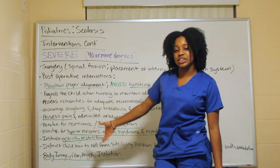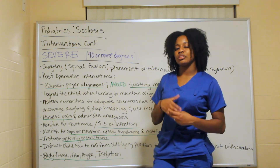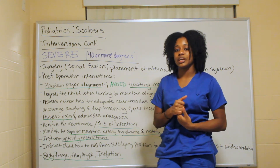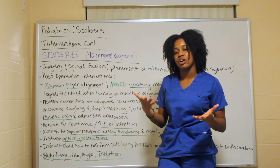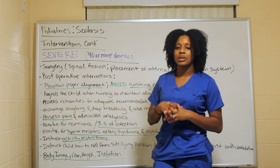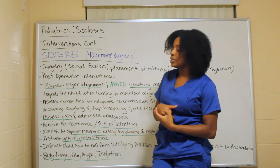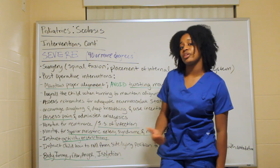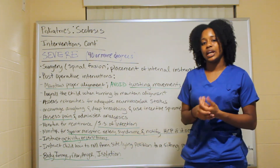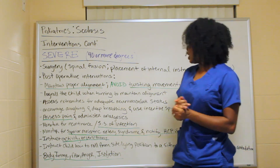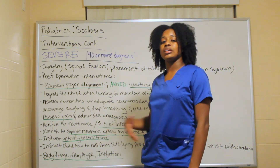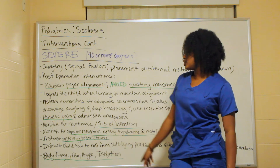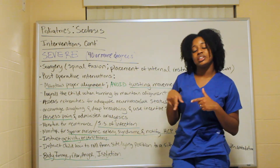Assess for pain and administer prescribed analgesics. Since these are children, nothing too heavy — medications like Tylenol 3 or Percocet may be appropriate. Monitor for incontinence and ensure regular bowel and GU function. Also monitor for signs and symptoms of infection, as with any surgical procedure.